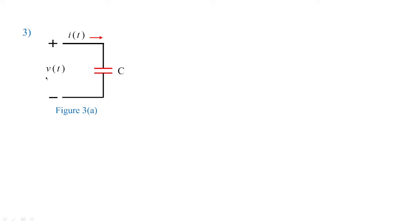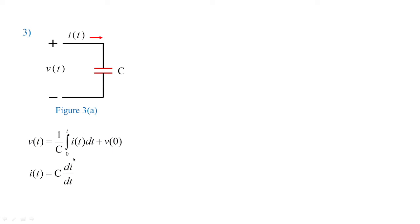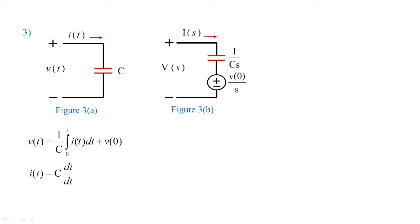Likewise, we can apply the formulas for a capacitor. In figure 3a, the supply voltage gives its energy to the capacitor. In time domain: V(t) = (1/C)·∫₀ᵀ I(t)dt + V(0), where V(0) is the initial voltage across the capacitor, and I(t) = C·dv/dt. Converting to frequency domain using Laplace transform: V(s) = (1/Cs)·I(s) + V(0)/s. This frequency domain formula is derived from the time domain formula.